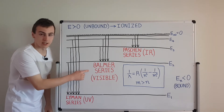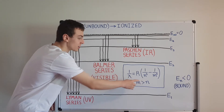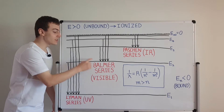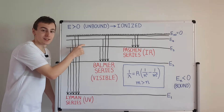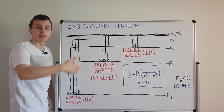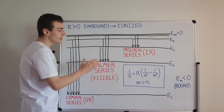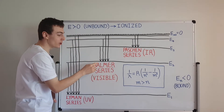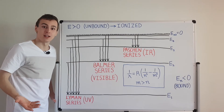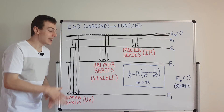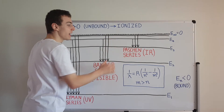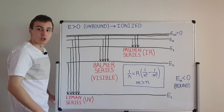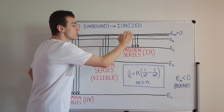The Balmer series has n equal to 2, so all electrons are dropping down to the first excited state. The Paschen series is associated with n equals 3. In principle these series contain an infinite number of possible energies, but in practice we can't distinguish large m values from each other — for example m equals 100 and m equals 101 are very close — because each series converges to a specific energy associated with a particular wavelength.